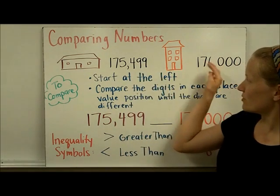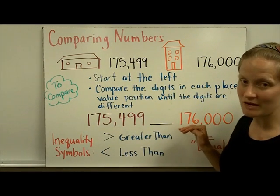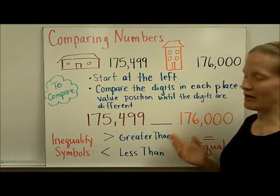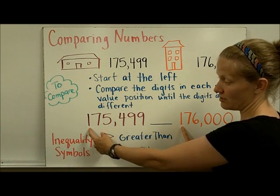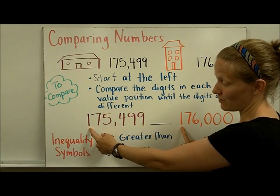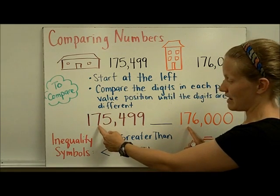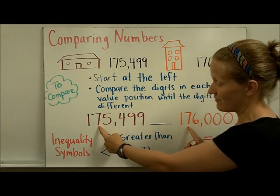So let's do an example using these same two numbers. I've rewritten them down here. And we're going to follow those directions and figure out which house is the better deal. We look first at the hundred thousands place and see that they're both ones. In the ten thousands place, both sevens.